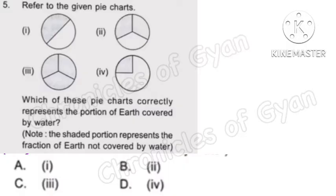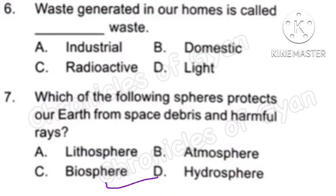Question 5: Refer to the given pie chart. Which of these pie charts correctly represents the portion of earth covered by water? As we all know that 70% of the earth is covered with water, and here chart number 4 represents that. So the correct answer is Option D.